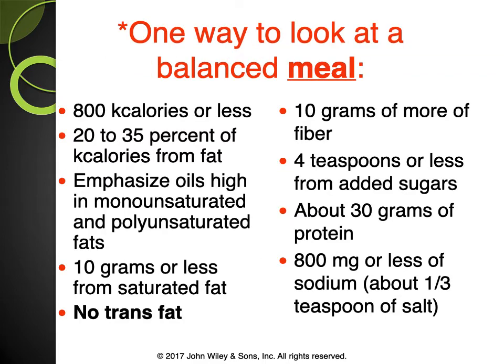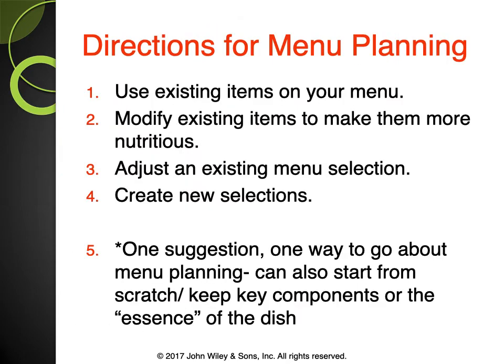Pay close attention to these balanced menu estimates for your group project. Per meal, the targets are approximately: 800 calories or less; 20–35% of calories from fat, with an emphasis on mono- and polyunsaturated oils; 10 grams or less of saturated fat; no trans fat; 10 grams or more of fiber; 4 teaspoons or less of added sugar; about 30 grams of protein; and 800 milligrams or less of sodium — roughly one-third teaspoon of salt.